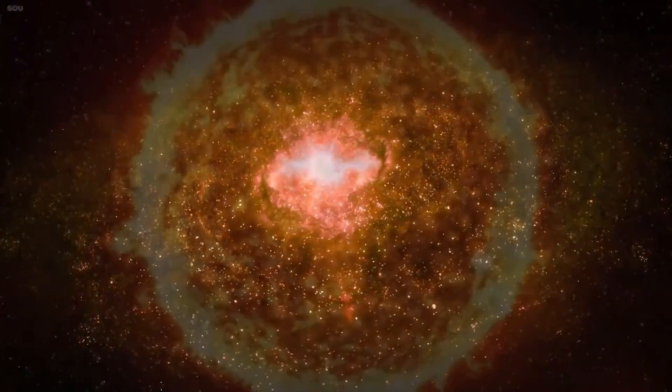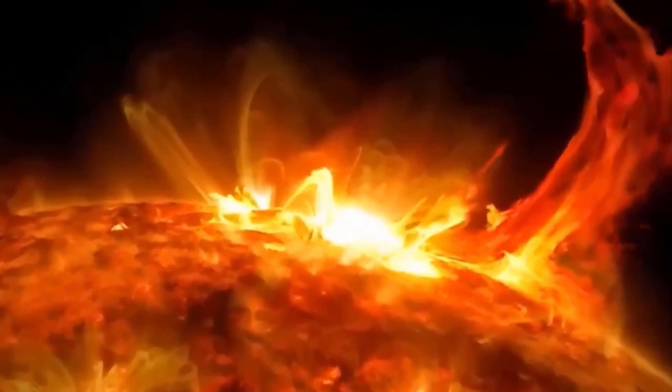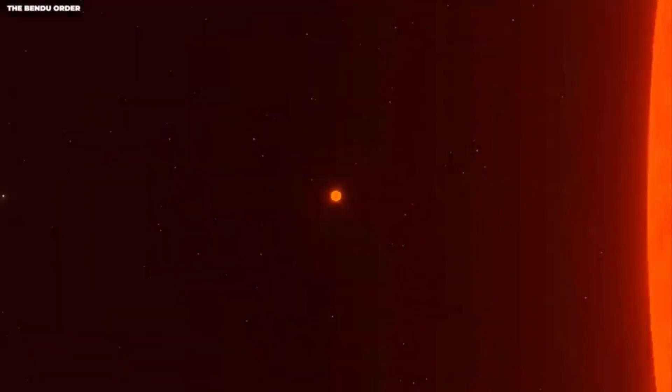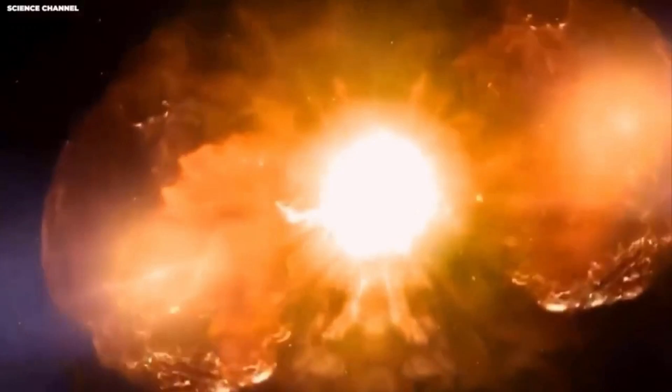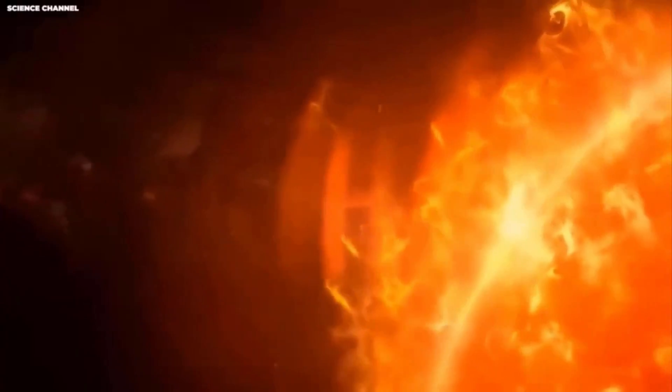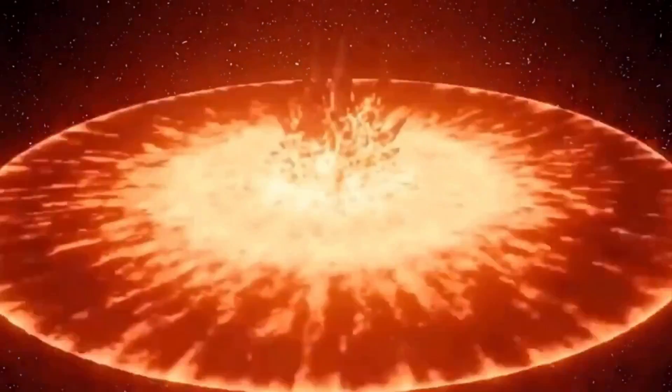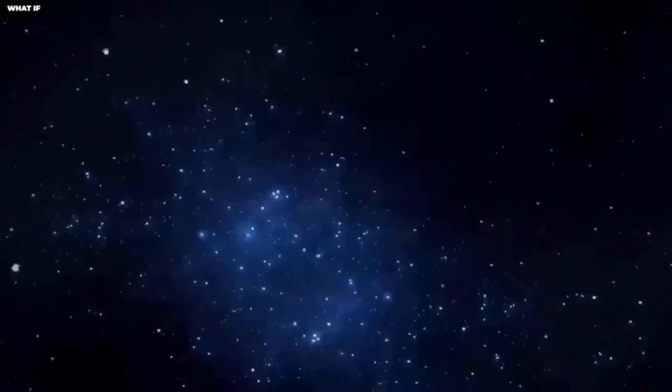Red supergiants are also known for releasing large amounts of material into space. In the later stages of a star's life, a crucial process occurs that shapes its evolution and leads to supernova explosions. However, the details of how stars lose mass, the rate of this loss, and the triggers for these explosions are still unclear. Betelgeuse, with its recent fluctuations, adds to this uncertainty.